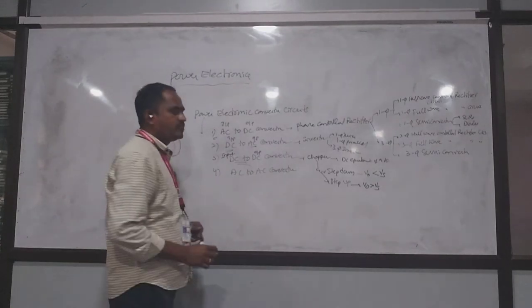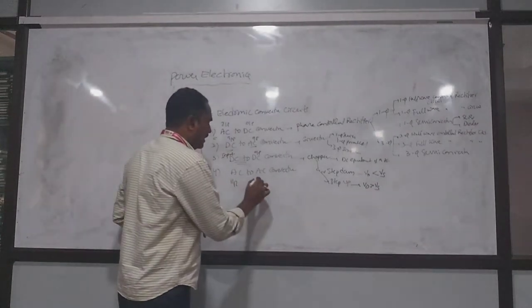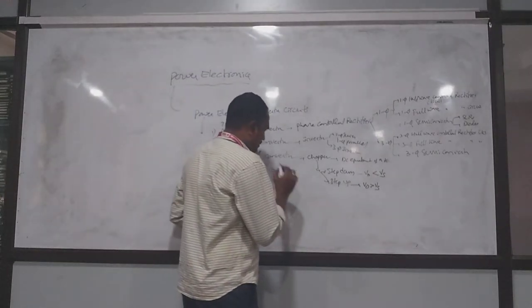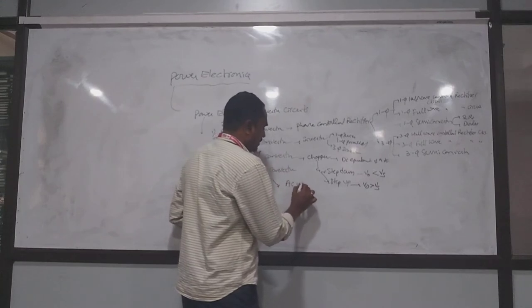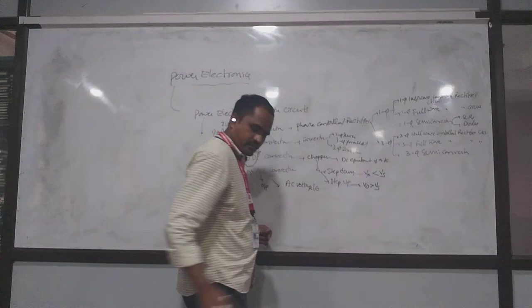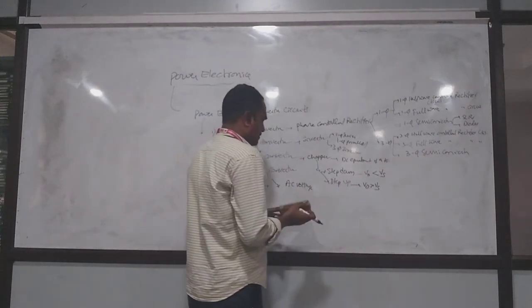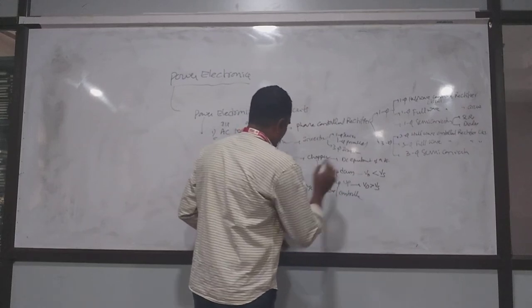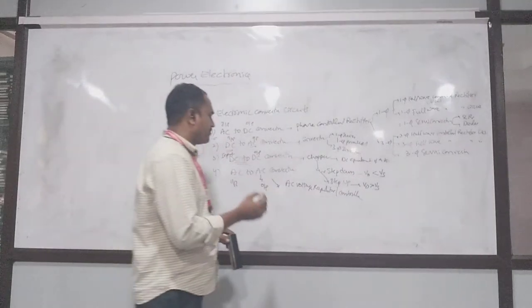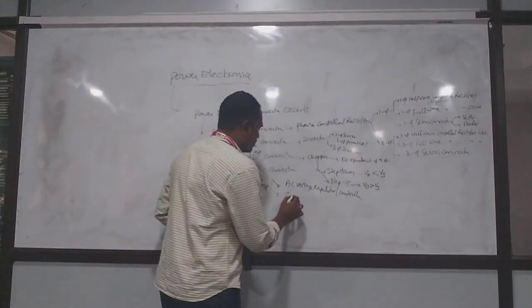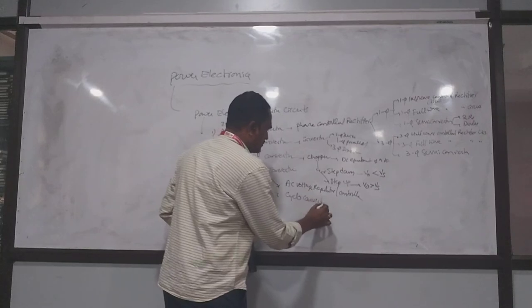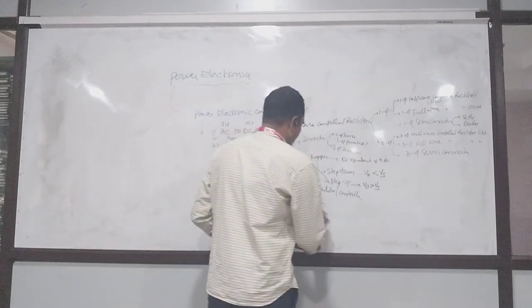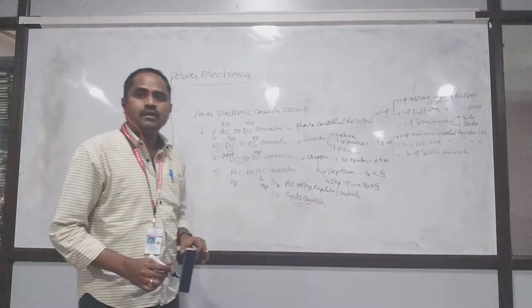Finally, we have the AC to AC converter. Here the input is fixed AC and the output is variable AC. In terms of voltage, we have an AC voltage regulator or controller. In terms of frequency, we have the cycloconverter — which converts fixed frequency to variable frequency.